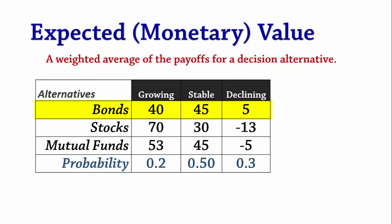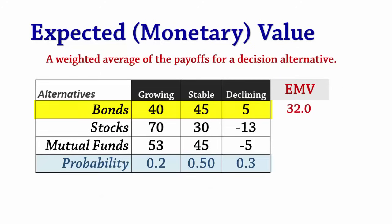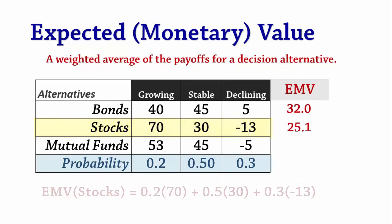For bonds, the expected value is calculated as 0.2 times 40, plus 0.5 times 45, plus 0.3 times 5, which equals 32. For stocks, the expected value is 0.2 times 70, plus 0.5 times 30, plus 0.3 times negative 13, which equals 25.1.